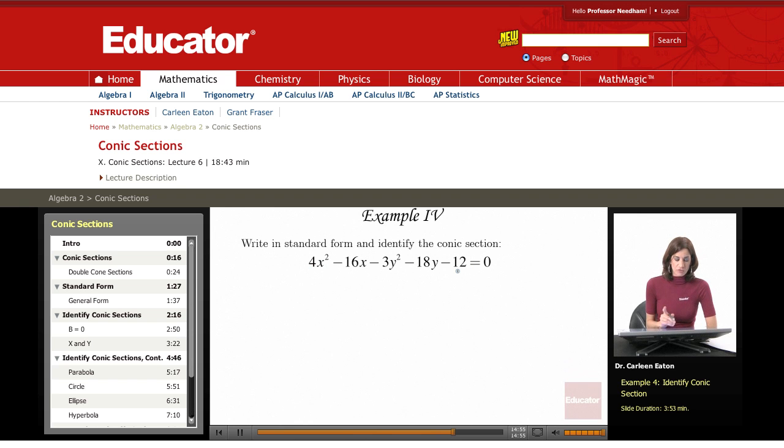This is almost in the general standard form but not quite. So I have 4x² - 3y² - 16x - 18y - 12 = 0. Now I can easily see that a equals 4 and c equals negative 3. Since these have opposite signs, that means that this is an equation describing a hyperbola.